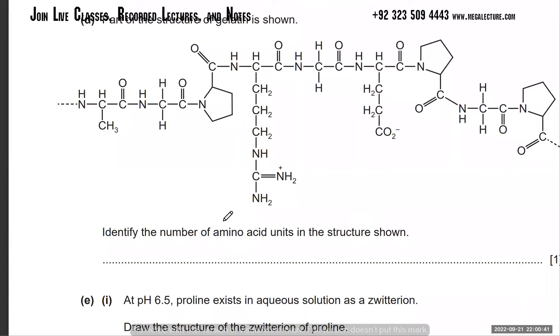Identify the number of amino acids in the structure. Break all the amide links - wherever you see amide links, break them. You're going to break this amide link and this amide link. Those fragments are your amino acids. This is one, two - because whenever an amino acid is formed a peptide bond is created. This is March 2021 question paper 4-2 - you should try and do this paper on your own.